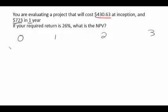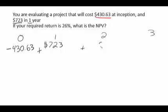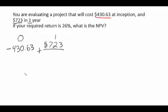Initially, at inception right now, it's going to cost us four hundred thirty dollars and sixty three cents, and we don't have to discount this because it's coming to us right now. Then in one year we have a seven hundred twenty three dollar positive payment. We don't have anything in year two or year three, but we do have to discount that seven hundred twenty three dollars. We are given a discount rate of twenty six percent, so the factor is one point two six.